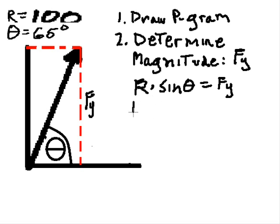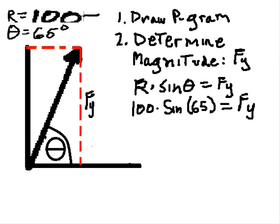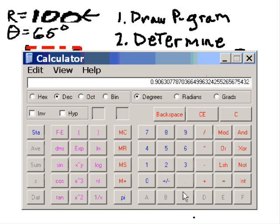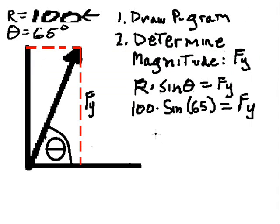Well, what's the resultant? It's 100. And theta is 65. So I write down sine of 65. That will equal my y component, Fy. I have to figure out what sine of 65 is. So I clear off the calculator, and 65 sine times R, which is 100, times 100 equals 90.63. I'll just put 90.6, round it off.